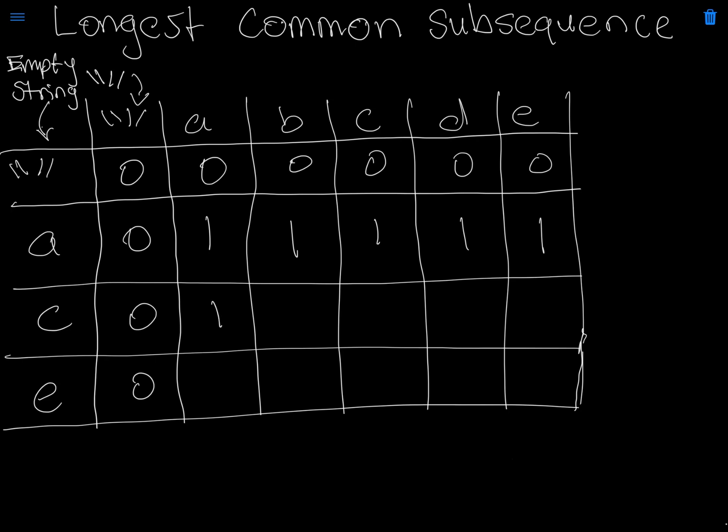Continuing down the row, C and A is still one, C and B is one, and C and C increments to two by adding one since there's a match. Then we take the max of C and D, which is two, and E and C — we take the max of that and that would also be two.